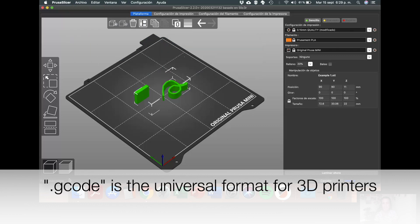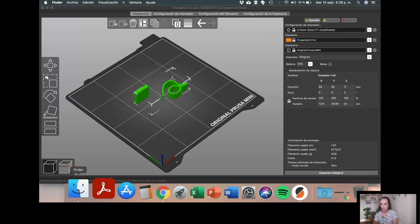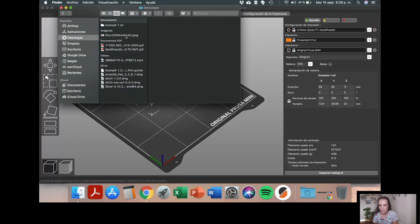So now I'm going to save it here. And this is the file. Let's go to Downloads. This is the file with the G code that you should introduce in your 3D printer to use it.